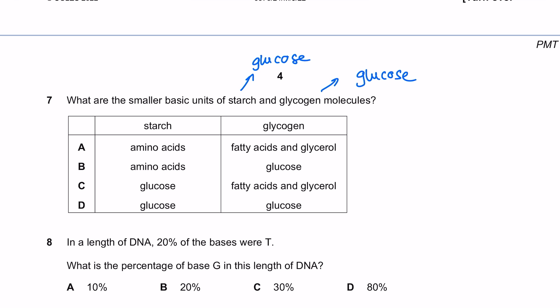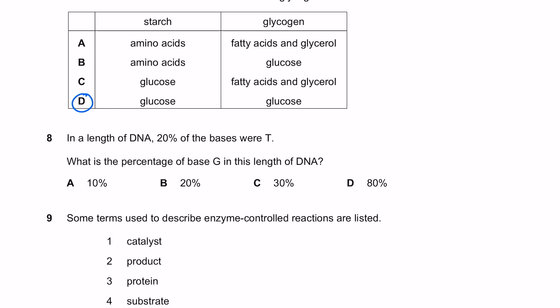In a length of DNA, 20% of the bases were T. What is the percentage of base G in this length of DNA? If 20% were T, and T always binds to A, which leaves 60% left over, that means 30% C and 30% are G. The answer here is C.